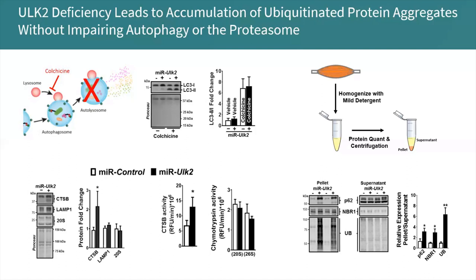It is important to note that elevated levels of aggregate proteins are present in different neuromuscular conditions such as Huntington's disease and ALS, which further exacerbate disease conditions when those aggregate proteins are present. Because of that, we hypothesized that since these muscles were deficient of ULK-2 for just one week, extending the experiment to represent a more chronic condition — two or three weeks — would reveal impairments in muscle force and myofiber integrity, as seen in those neuromuscular diseases like Huntington's and ALS and other myopathic conditions.